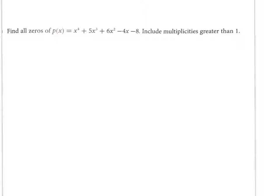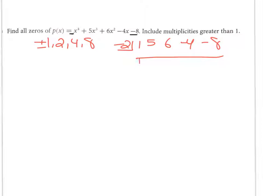Find all zeros of this degree-4 polynomial including multiplicities. With five terms I can't factor directly, so I'll make a list of possible rational zeros. The leading coefficient is 1 and the last term is −8, so I check factors of 8: 1, 2, 4, 8. Testing on the calculator, negative 2 works. Doing synthetic division with −2 gives a remainder of zero — confirmed.